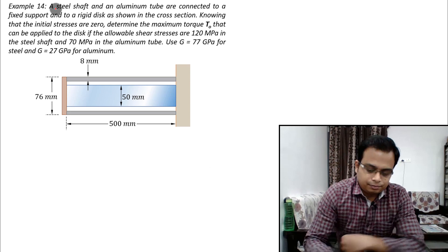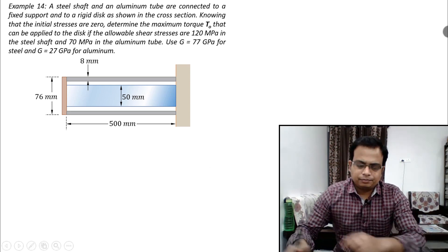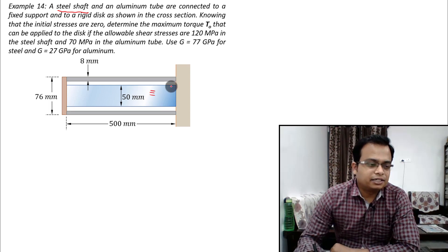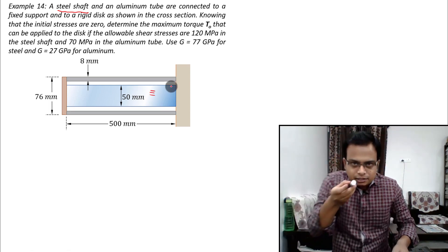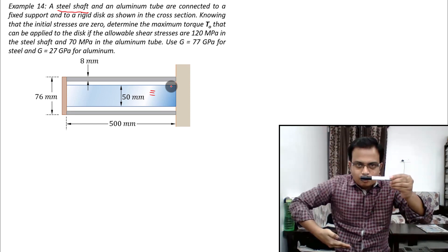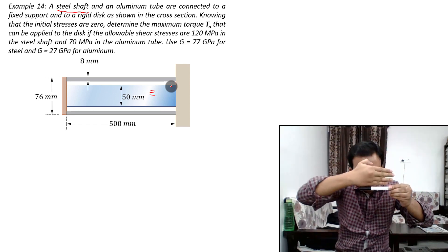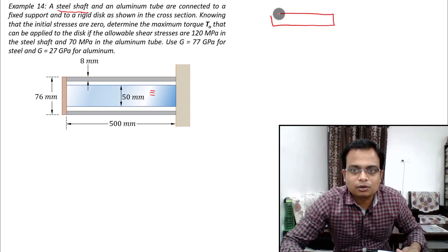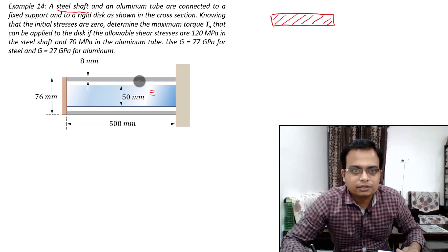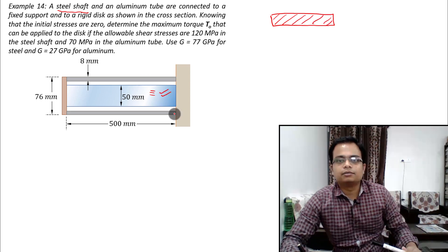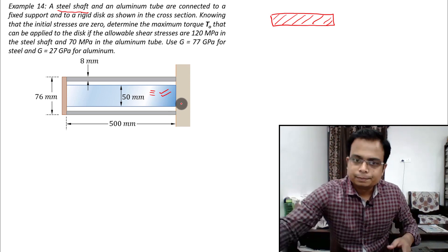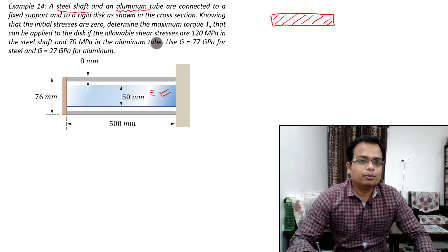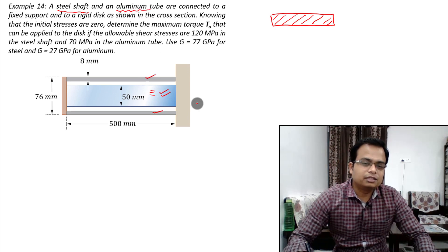What we have is a steel shaft. If you cut the shaft from here, what you will see is a rectangular cross section — that is what you will see. Secondly, this shaft is enclosed inside an aluminum tube. This is the tube.